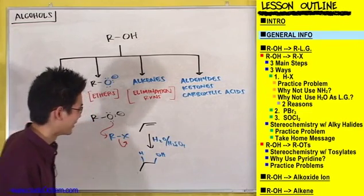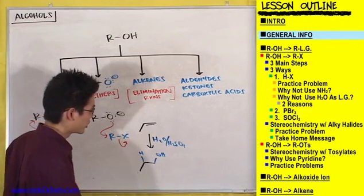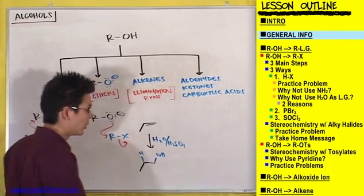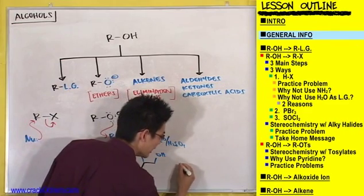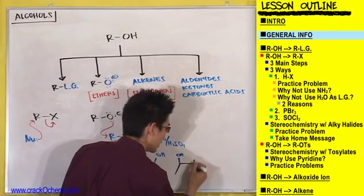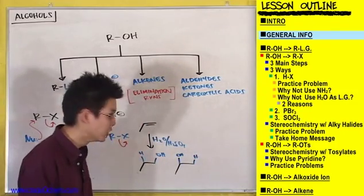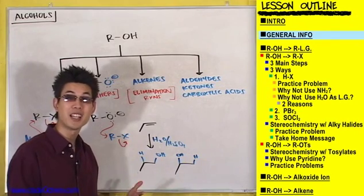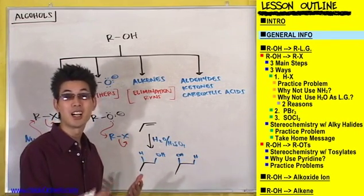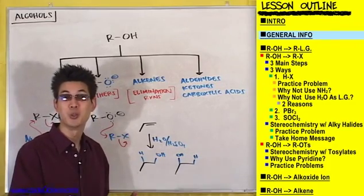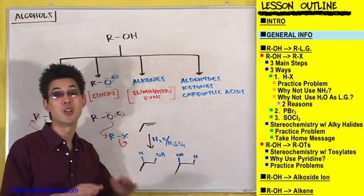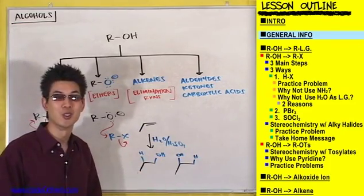One thing to mention before I erase this: with this addition reaction, when a double bond reacts with H₂O and H₂SO₄, you are going to get an alcohol, but it's not going to be the less substituted one — it'll be the more substituted alcohol with OH on the more substituted carbon. You can make the other regioisomer too, but that would require hydroboration-oxidation: BH₃·THF followed by NaOH/H₂O₂. If you don't remember that, just go back to the addition reactions chapter.